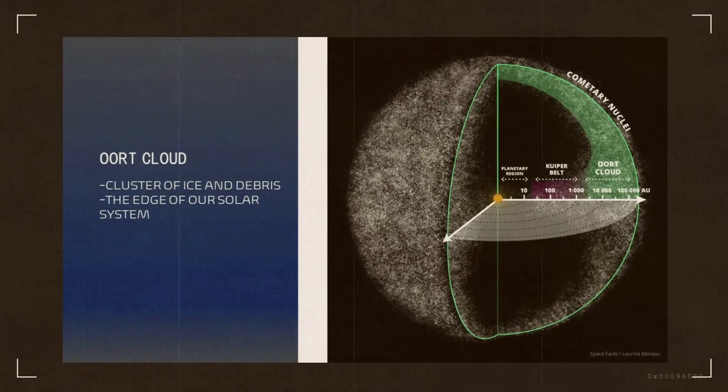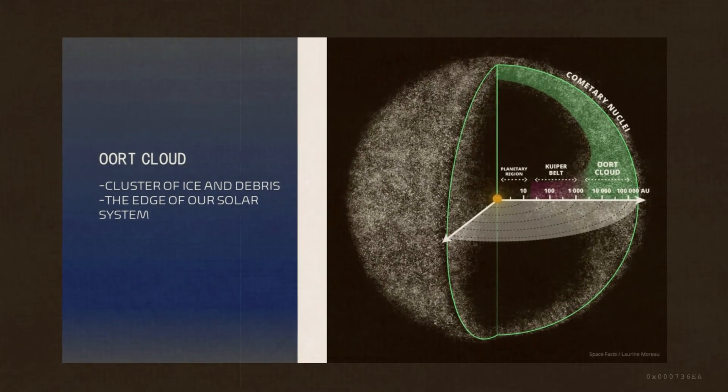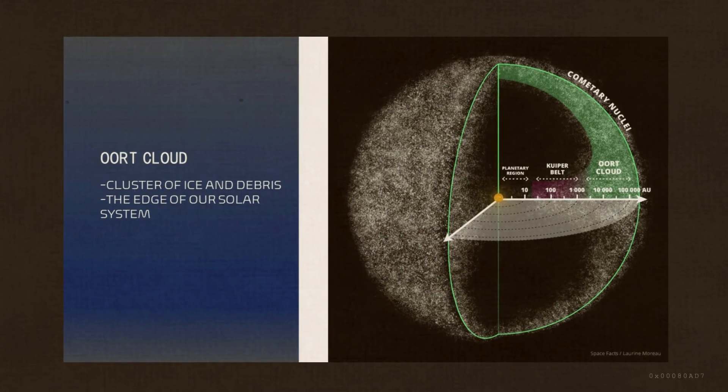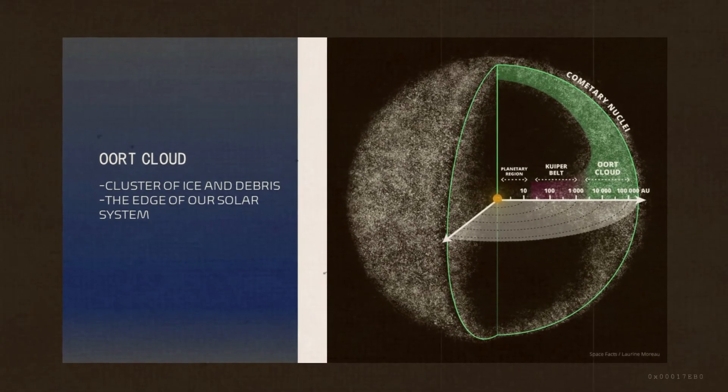The Oort Cloud is a theoretical cloud of comets around the sun. It is known as the edge of our solar system, where our sun no longer has influence of gravity.